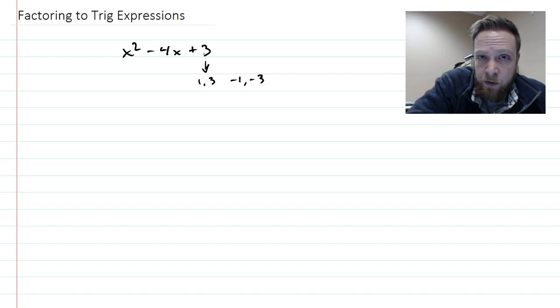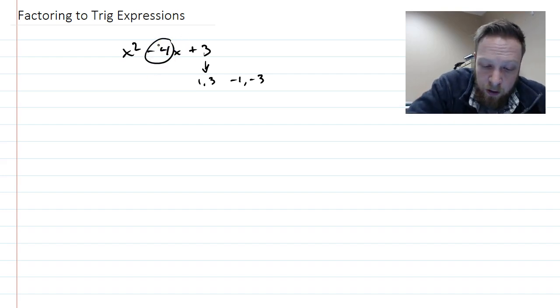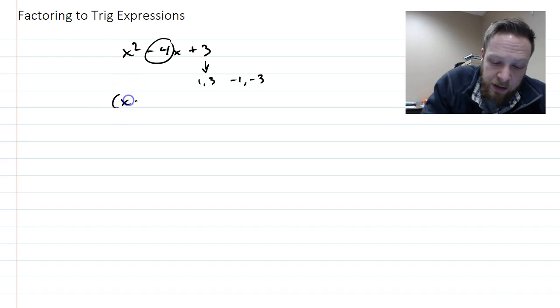And then you thought, which of those are going to add up to your b, your middle number? And so we would factor it as x minus 1 and x minus 3.